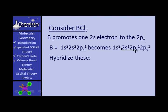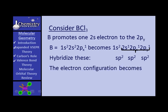Now let's hybridize these three parents — the S, the Px, and the Py — and we get three hybrid offspring. If you hybridize three parents, you get three hybrid offspring. They are SP2, SP2, and SP2, with one part S character and two parts P character. The electron configuration then becomes 1S2, 2SP2, SP2, SP2, and each of those SP2s has one electron in it.